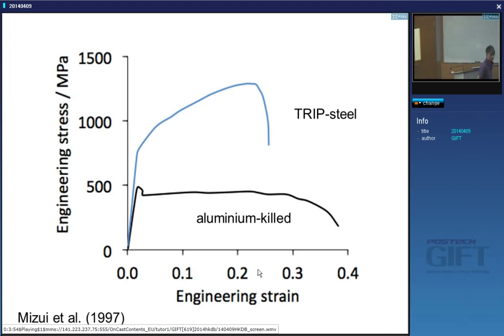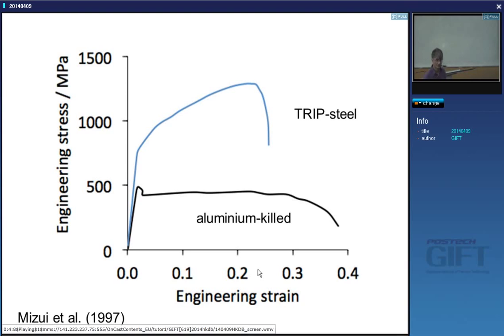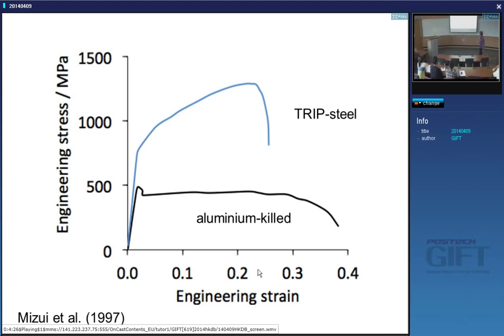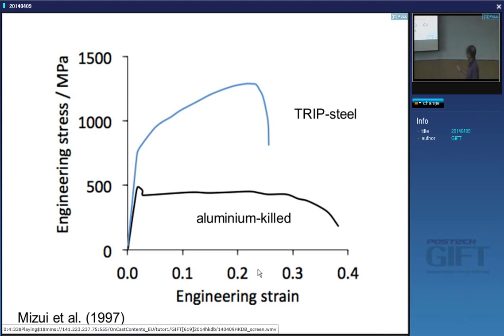So why TRIP steels? A normal steel has a strength of the order of 450 MPa and quite a large elongation. But if you want to make your car lighter, you need greater strength so you can use a thinner piece of material. However, you also need a lot of ductility to form complicated shapes very quickly. TRIP steels have a yield strength of about 750 MPa and still have quite a lot of elongation — the uniform elongation is of the order of 25%.